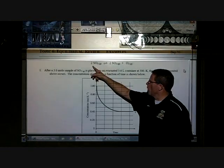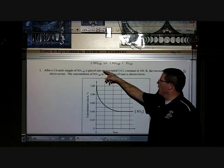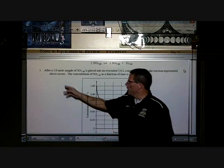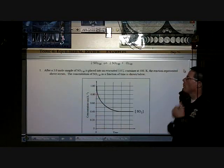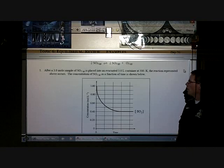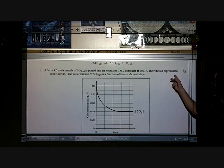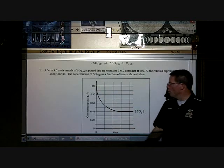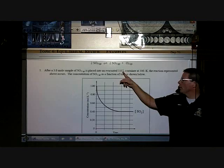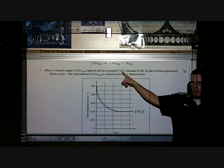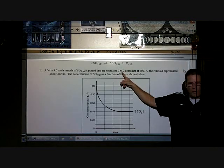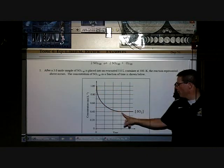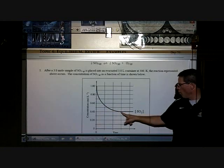Here we've got our balanced equation where we have two moles of sulfur trioxide at equilibrium forms two moles of sulfur dioxide and oxygen. After a three-mole sample of SO3 is placed into an evacuated three-liter container at 300 Kelvin, the reaction represented above occurs. The concentration of SO3 as a function of time is shown below, so we've got our three-mole in three liters, which is what molarity? One. That's why we have a one here. So the molarity actually changes from 1.0 to 0.4.